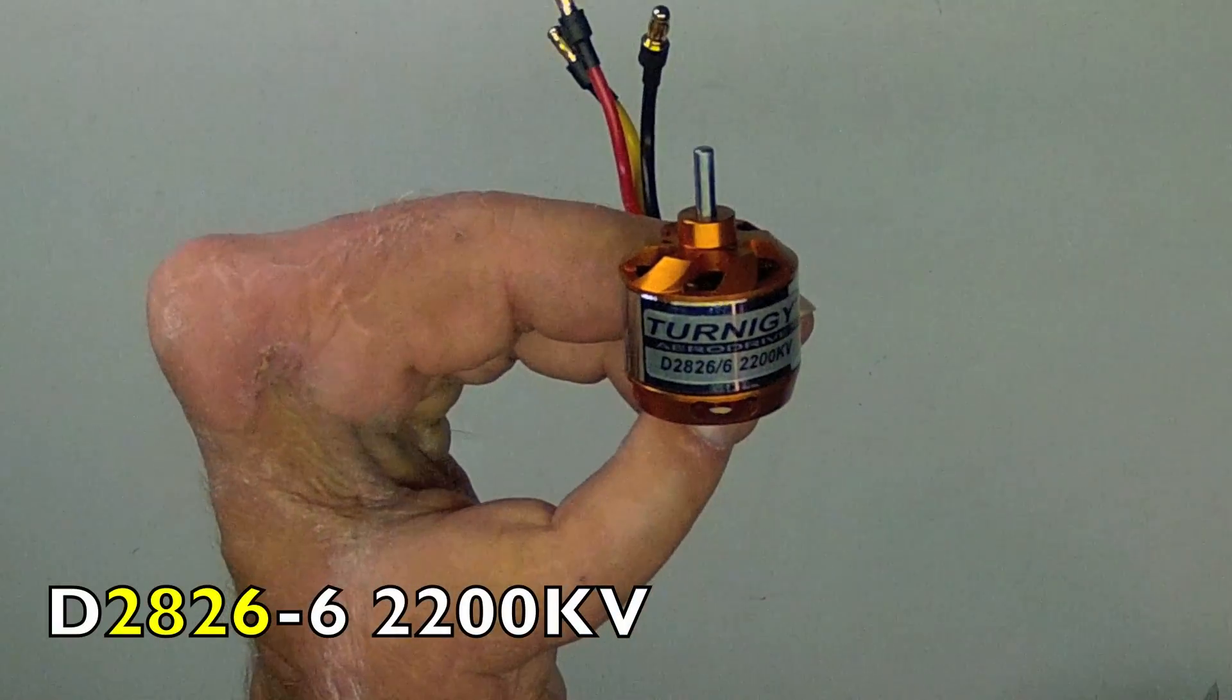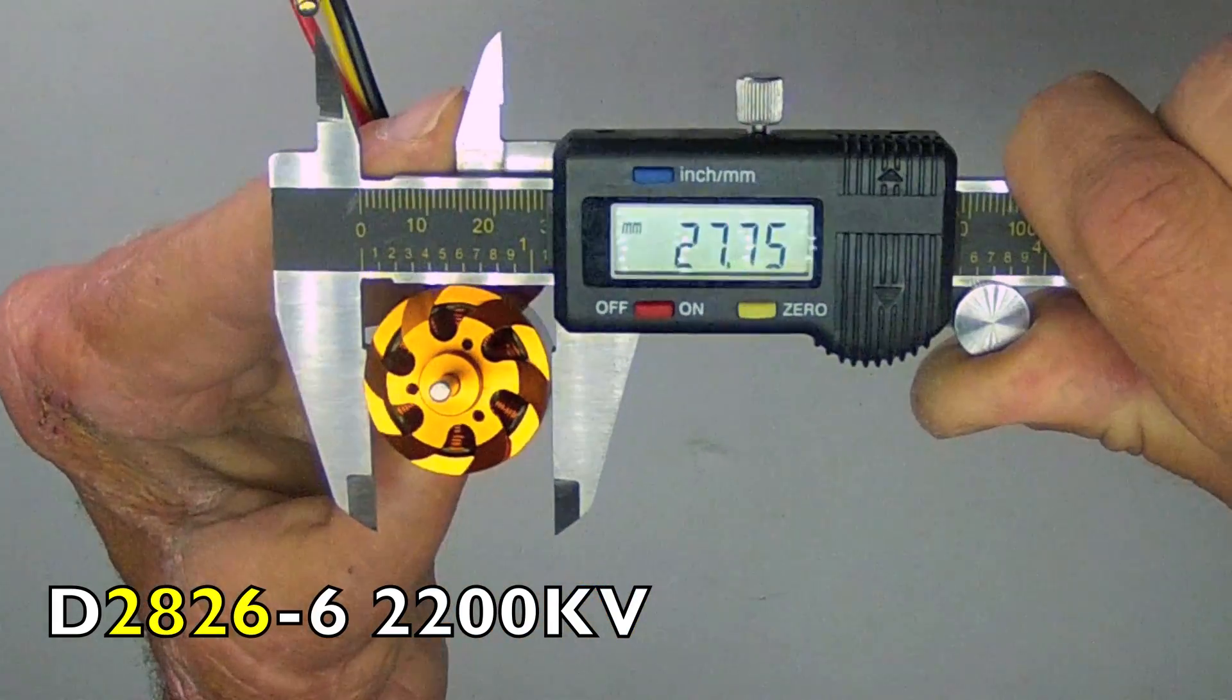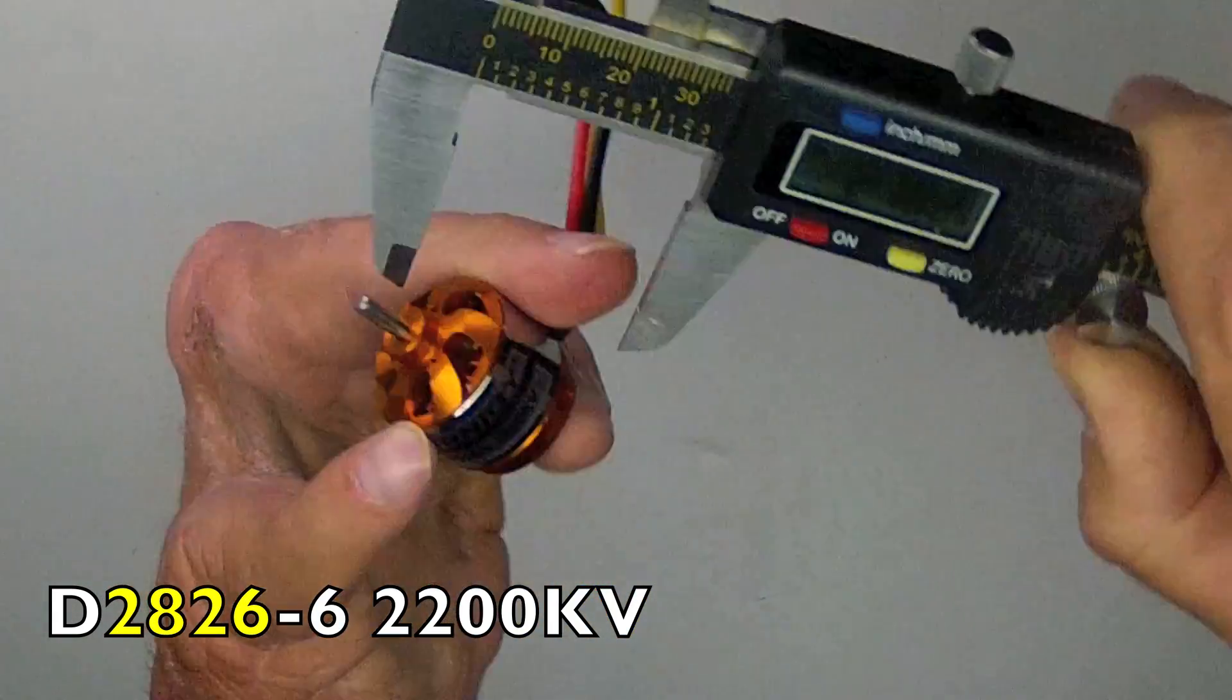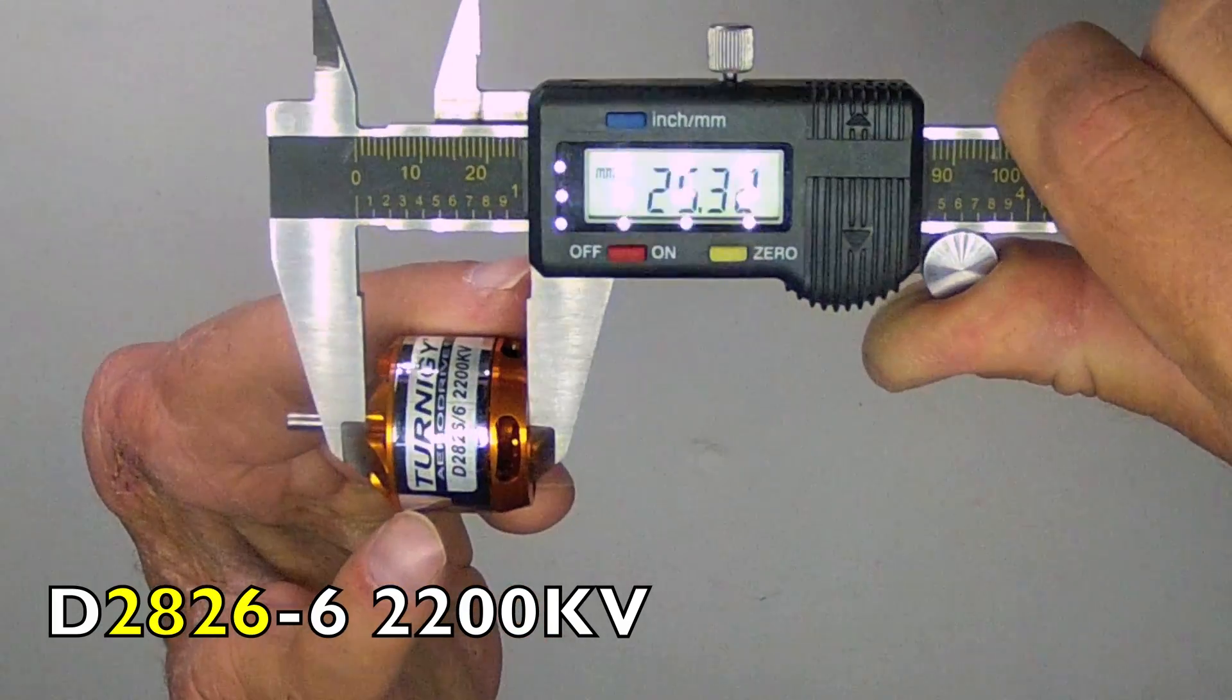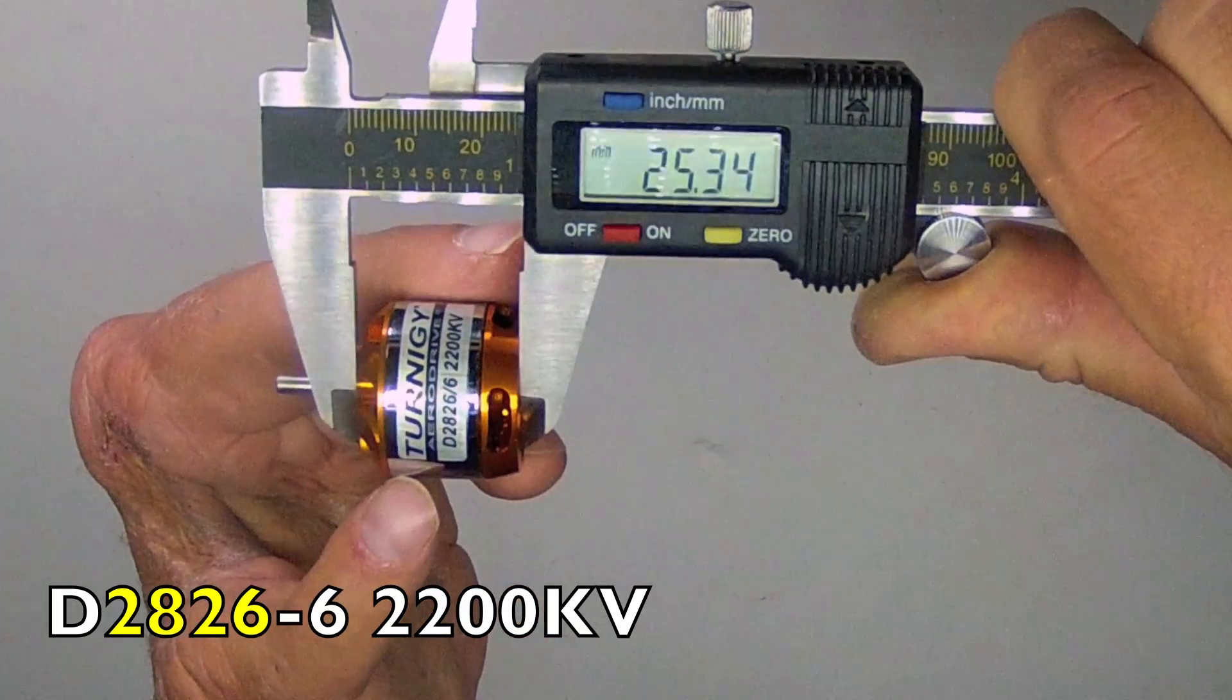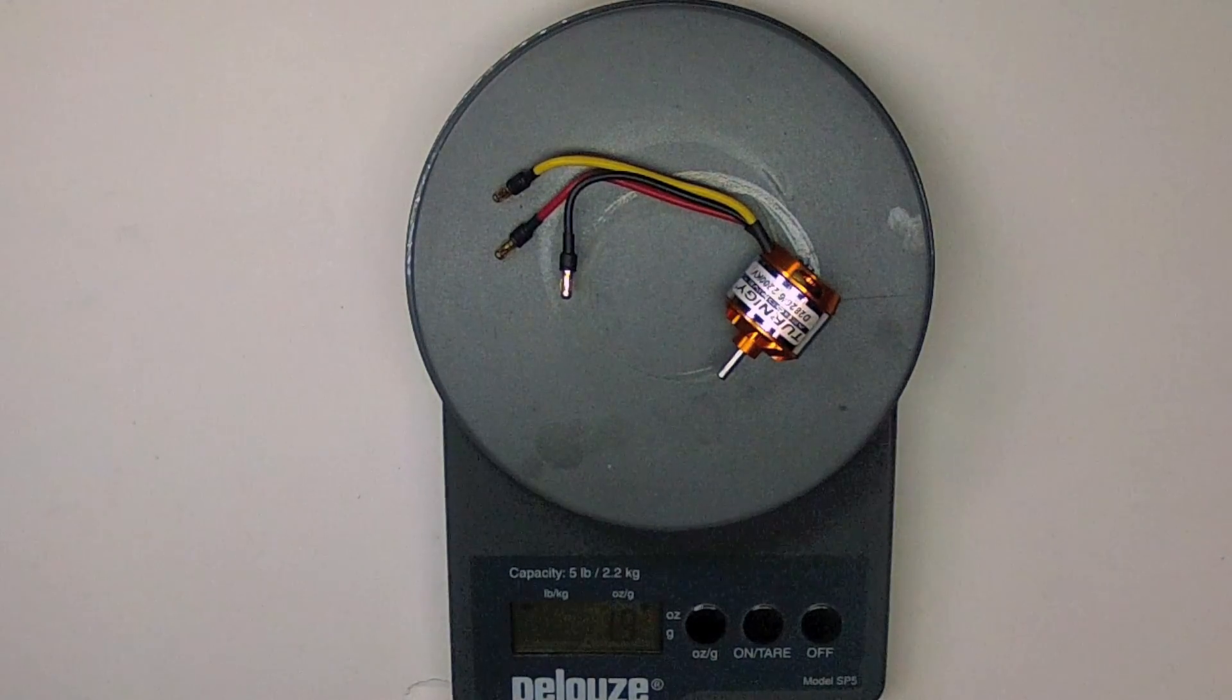As it is a 28-26mm, the diameter is just under 28mm. And the overall length of the motor proper is just under 26mm. It's 55 grams or 1.9 ounces.